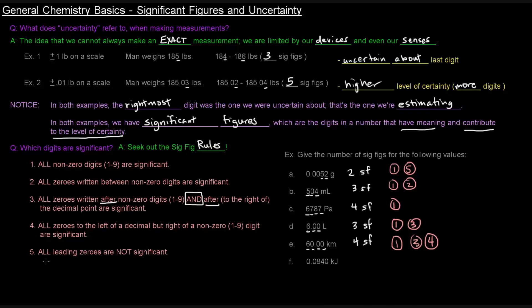And F, 0.0840. So leading zero is not significant. Eight, four, those have to be significant. And then the zero is after a non-zero digit and to the right of the decimal point, so that one's significant. So that is three significant figures. So that one is rules one, five, and three, or one, three, five, however you want to look at it.